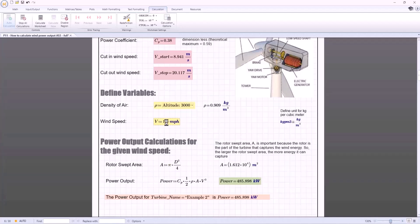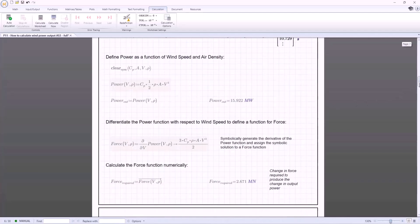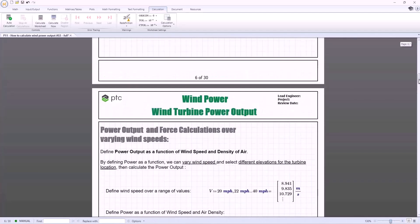In PTC Mathcad Prime 11, when auto-calculation is turned off, the worksheet will now be in manual calculation mode. In manual calculation mode, if you make any changes to math regions, those math regions and math regions that depend on those math regions will be greyed out as out of date, like with auto-calculation off in previous versions.